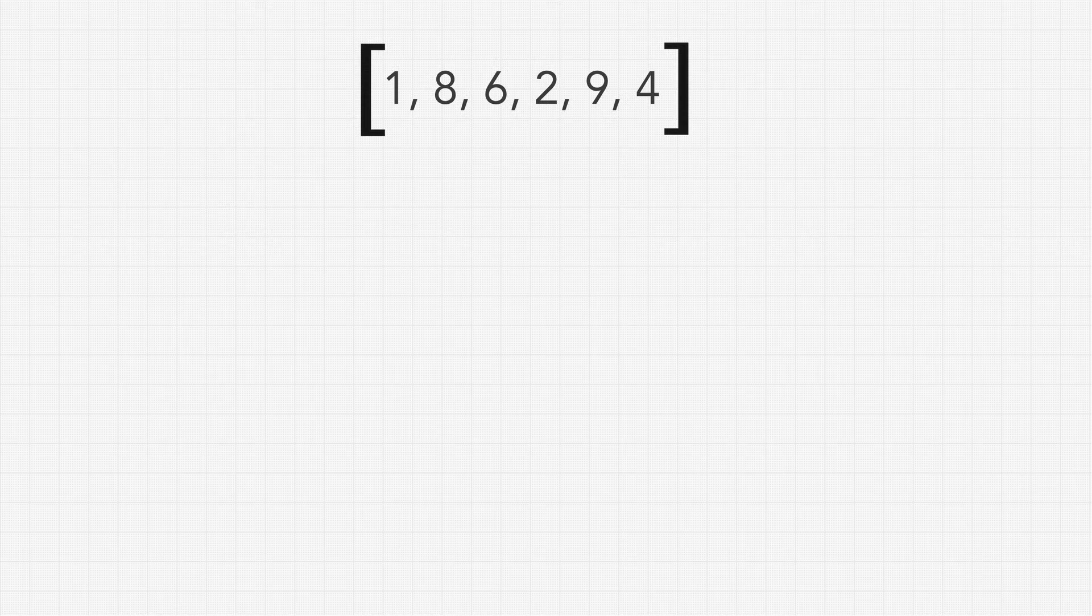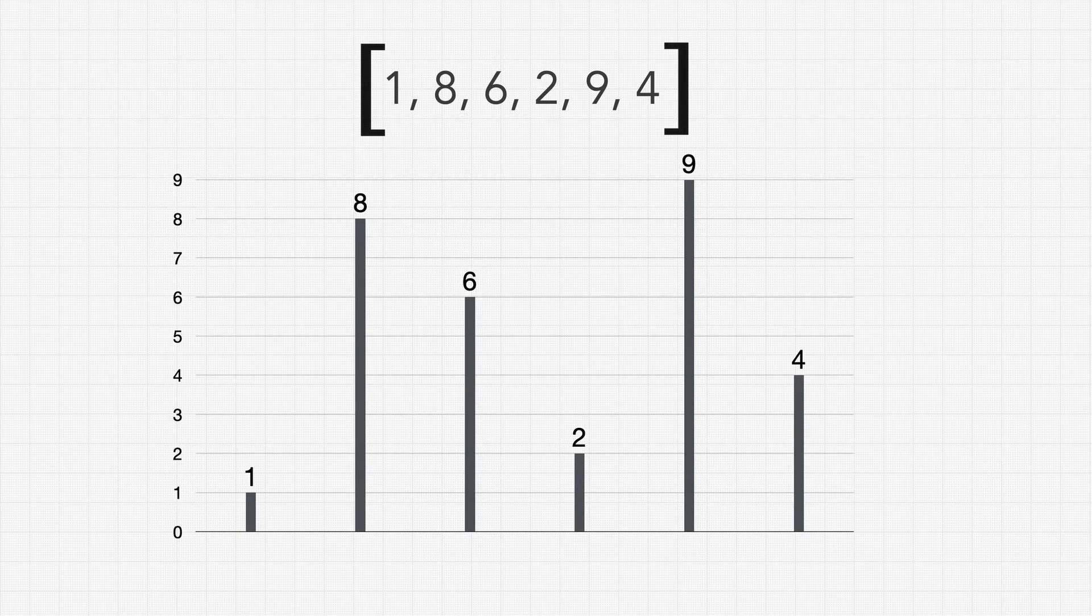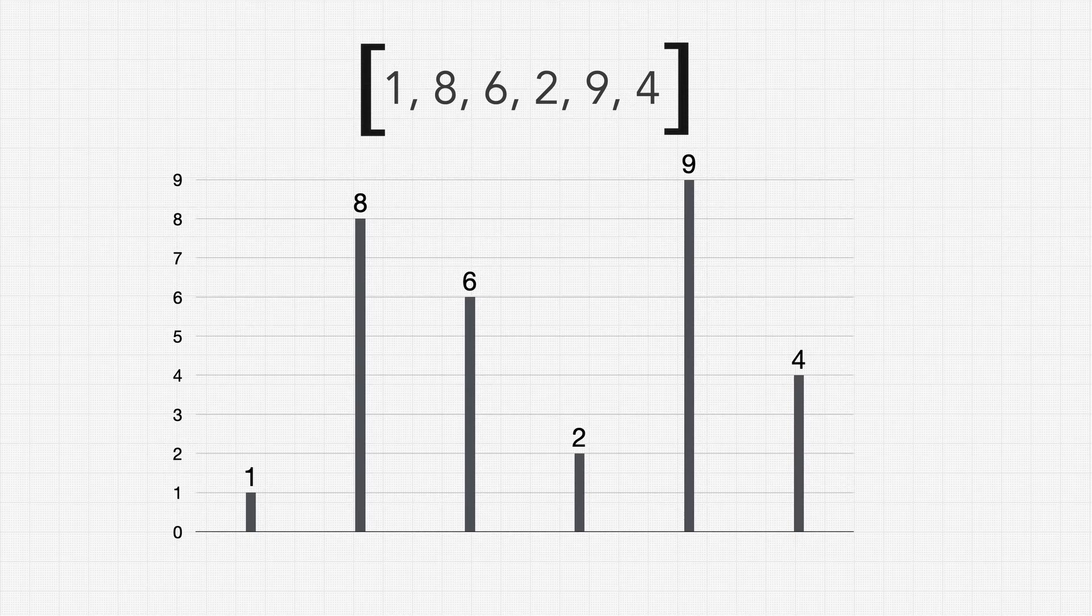Imagine we're given this array. This array becomes this bar chart where the value of the element is the height of the vertical line. Each element maps to its corresponding line in the order that it appears in the array.